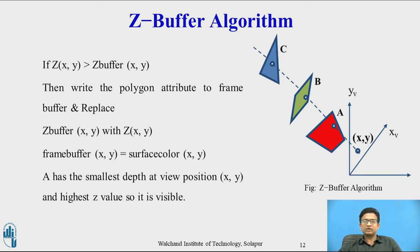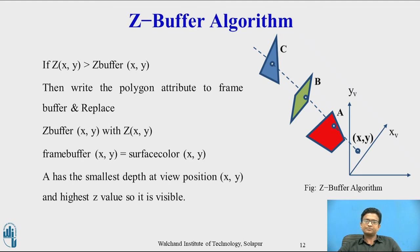In the diagram, we have three polygons: A, B, and C, with (x, y) as the view point. From the view point, A is closer, B is farther than A, and C is farther than B. As A is the closest surface, it has the smallest depth at view position (x, y) and has the highest z value. That is why surface A is visible at that pixel position. If B had the highest depth, then B would be visible first, then A. Since A is closest, it has the highest z value, so polygon A is visible.